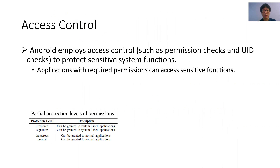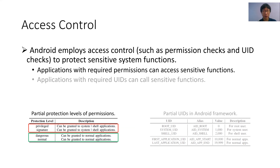Permission-based access control requires applications to get necessary permissions to collect private user data, retrieve sensitive device information, or use critical system features. Depending on the protection level that clarifies the potential risks included in a permission, permissions can be roughly divided into four categories. Permissions with protection levels 'privileged' and 'signature' can only be gained by pre-installed system applications, such as system services and ADB shell, and are thus associated with high privilege. Permissions with protection levels 'dangerous' and 'normal' can be obtained by normal applications and are associated with low privilege.